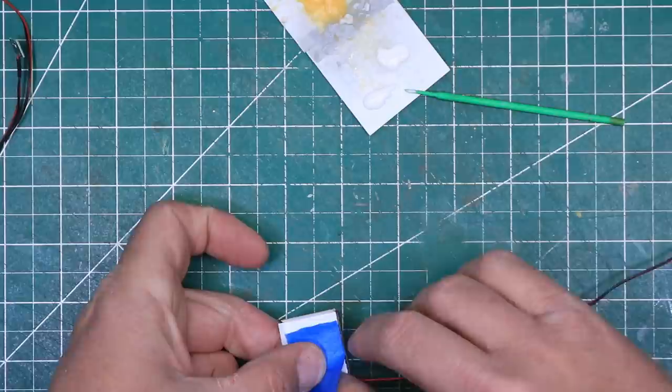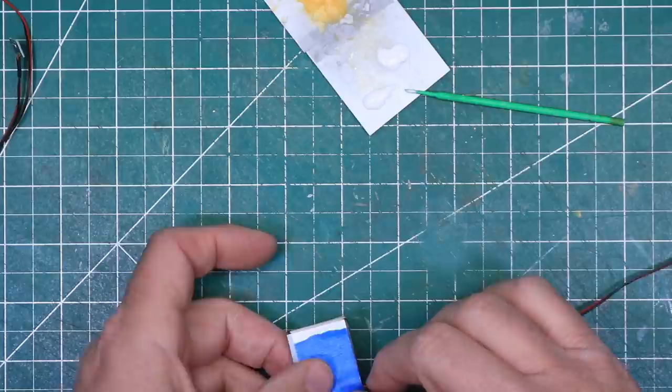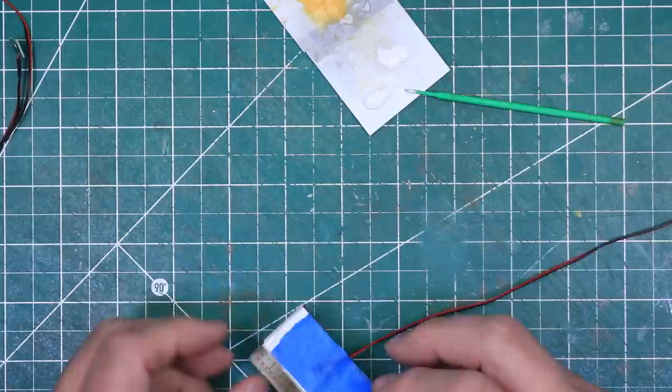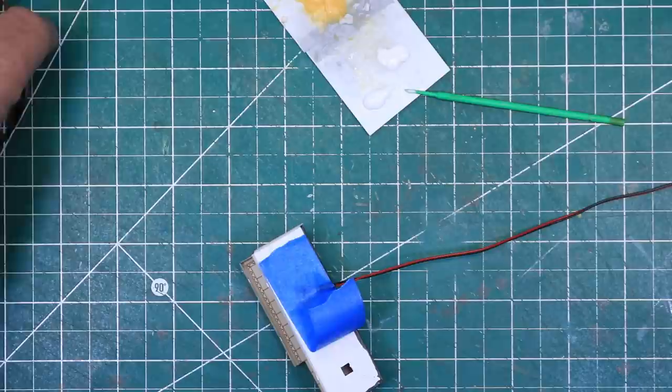To power the LEDs, you will need some sort of power supply. Now the instructions for the roomettes names three different options, but these LEDs are created to work with the Woodland Scenics Just Plug system, so I used that. I'll give you my evaluation of the Just Plug system in a few minutes.